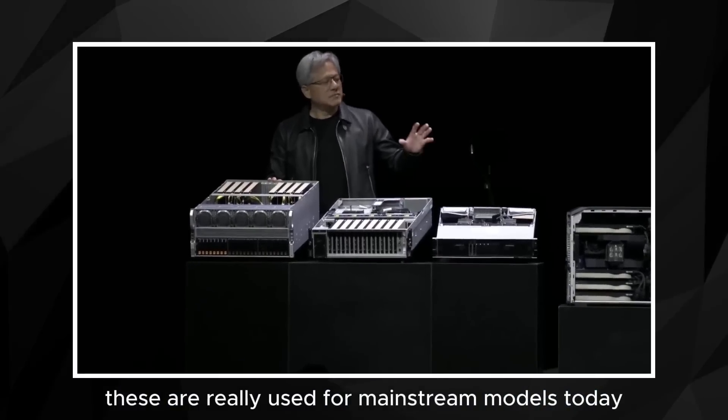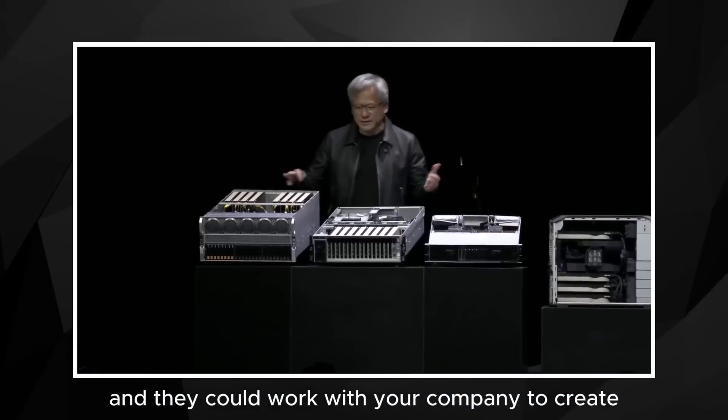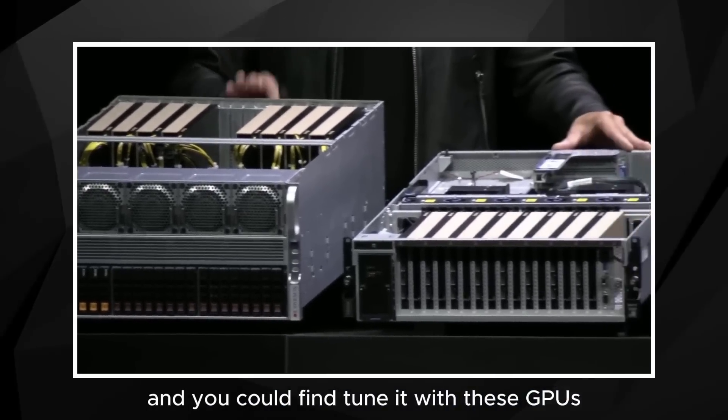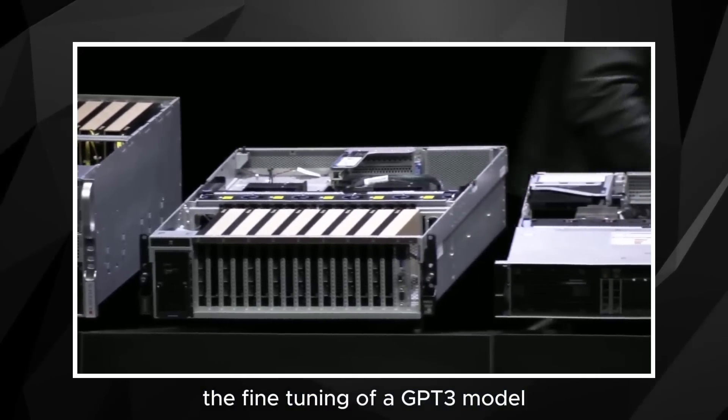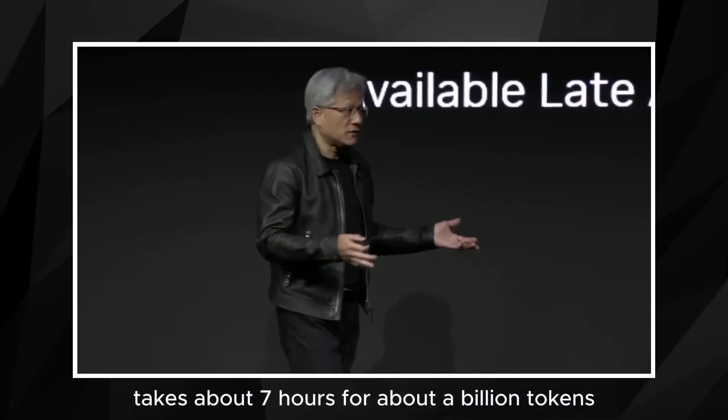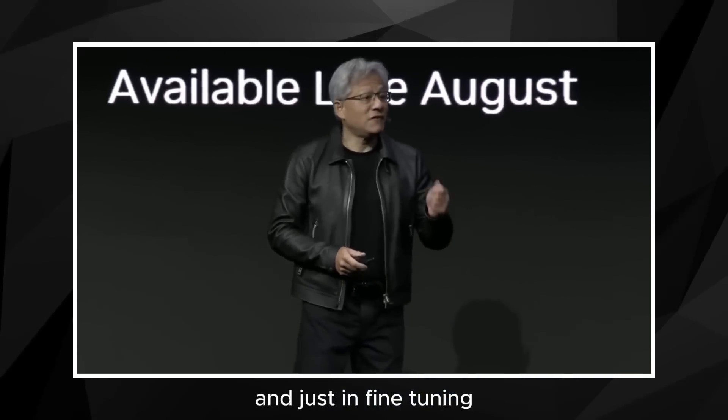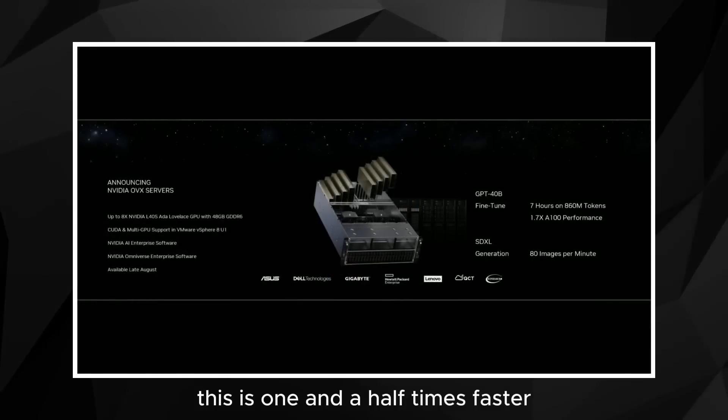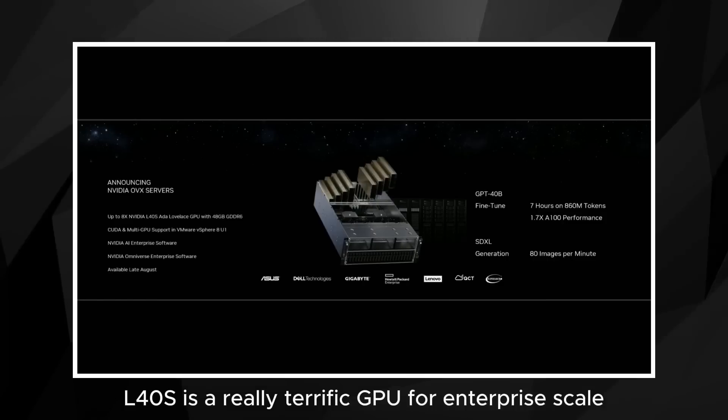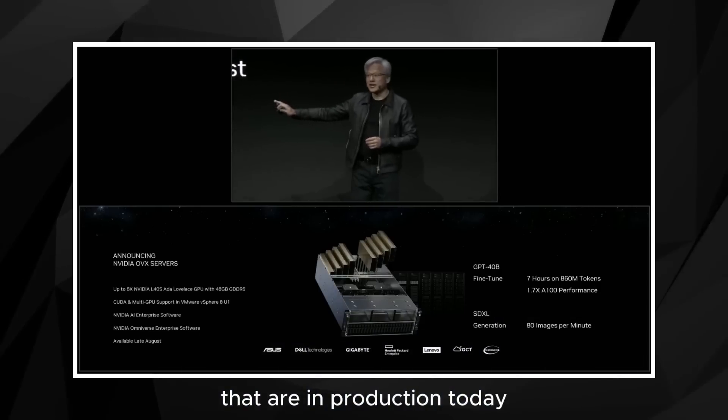These are really used for mainstream models today that you can download from Hugging Face, or NVIDIA could work with your company to create. You could use in just about all kinds of applications around your company. And you could fine-tune it with these GPUs. The fine-tuning of a GPT-3 model, so this is GPT-3 40 billion parameters, takes about seven hours for about a billion tokens. And so 15 hours in a workstation with four GPUs, of course, takes less with eight GPUs. And just in fine-tuning, this is one and a half times faster than our last generation A100. And so L40s is a really terrific GPU for enterprise-scale fine-tuning of mainstream large language models. These amazing new enterprise systems that are in production today.